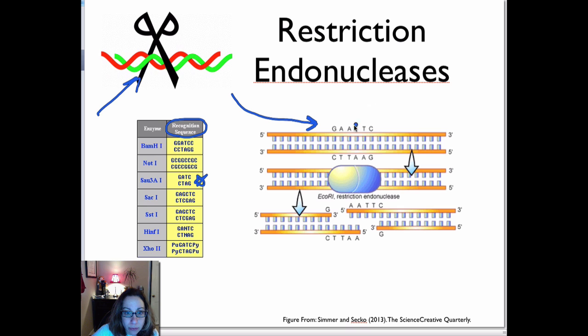Now the thing is, they don't cut randomly. They cut at a very specific site. So you can see here, we have ECOR1. ECOR1 recognizes the sequence GAATTC, and will always cut between the G and the A.